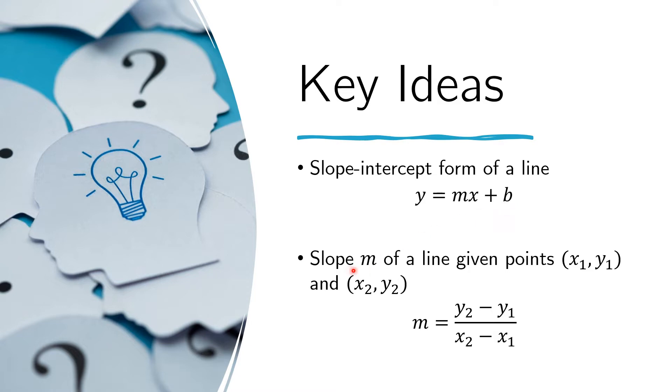We also recall that the slope m of a given line, if it goes through the points (x1, y1) and (x2, y2), that slope is equal to the ratio of the difference in the y-coordinates to that of the difference in x-coordinates.